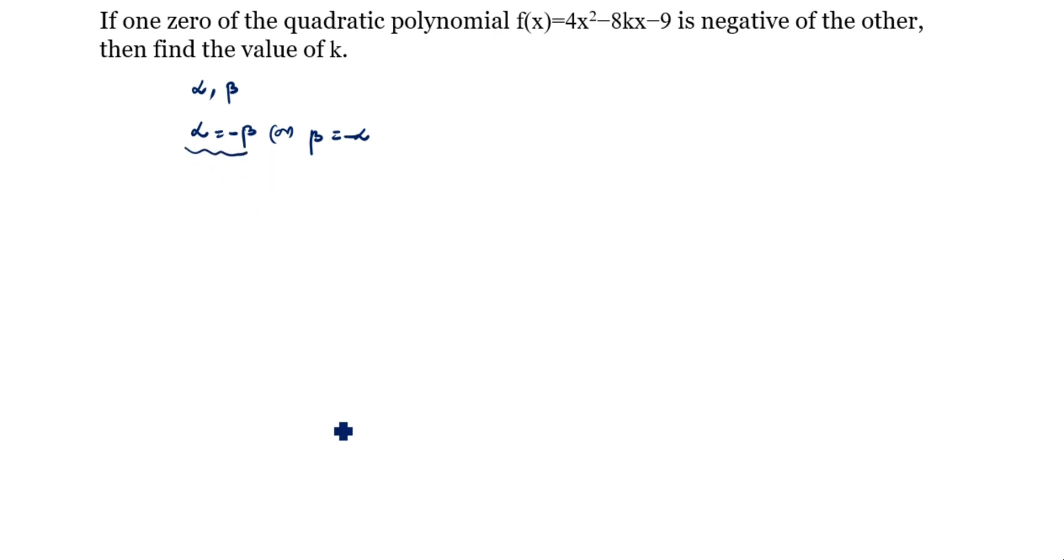Now we will take this one. What is the general form of the quadratic polynomial equation? ax² + bx + c = 0. What is given in this question? 4x² - 8kx - 9 = 0.